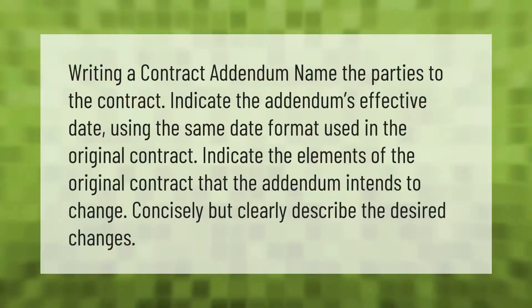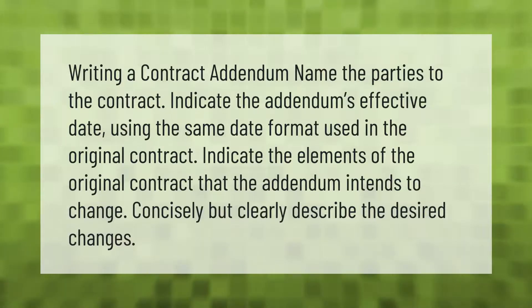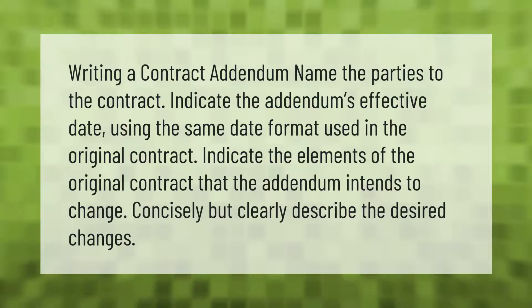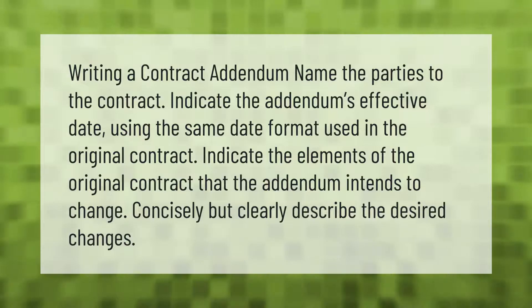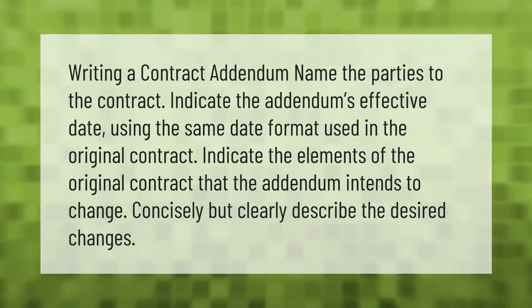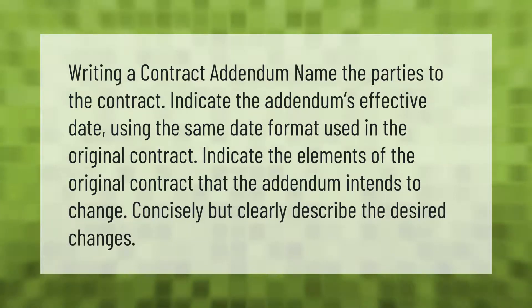Writing a contract addendum: name the parties to the contract, indicate the addendum's effective date using the same date format used in the original contract, indicate the elements of the original contract that the addendum intends to change, and concisely but clearly describe the desired changes.